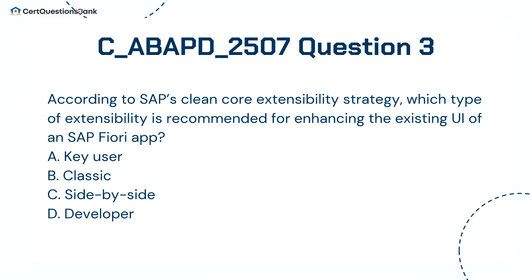According to SAP's Clean Core Extensibility Strategy, which type of extensibility is recommended for enhancing the existing UI of an SAP Fiori app? A. Key user. B. Classic. C. Side by side. D. Developer.